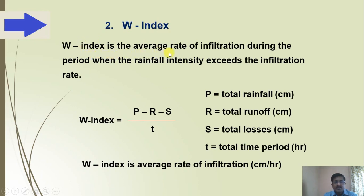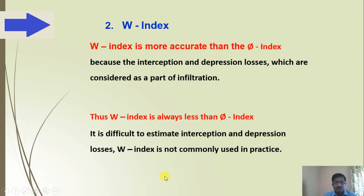W index is the average rate of infiltration during the period when the rainfall intensity exceeds the infiltration rate. W = (P − R − S) / t, where P is total rainfall in centimeter, R is total runoff in centimeter, S is total losses in centimeter, and t is total time period in hours. The unit of W index is centimeter per hour. W index is more accurate than phi index because interception and depression losses are accounted for. Thus, W index is always less than phi index. However, it is difficult to estimate interception and depression losses, so W index is not commonly used in practice.